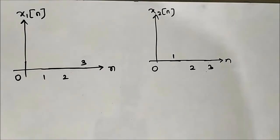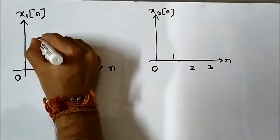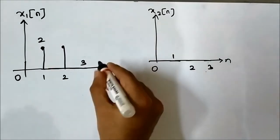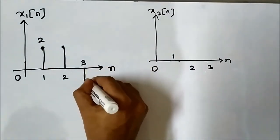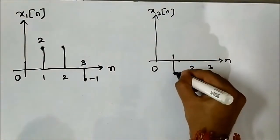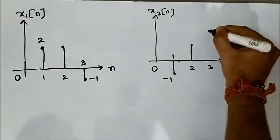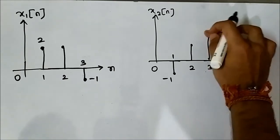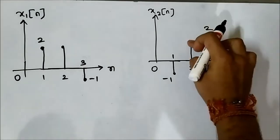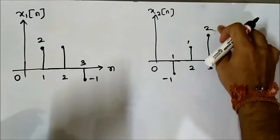Now let us take another two discrete signals. Let us say we take the values 0, 2, 2, -1 and 0, -1, 1, 2 for these two signals.